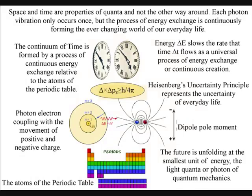Space and time are properties of quanta, and not the other way around. Each photon vibration only occurs once, but the process of energy exchange is continuously forming the ever-changing world of our everyday life. We measure this process as a period of time relative to the atoms of the periodic table.